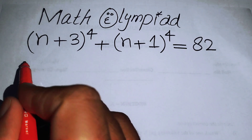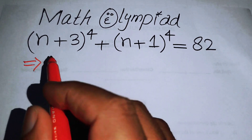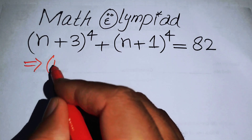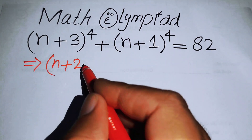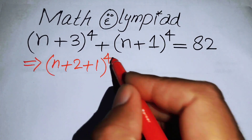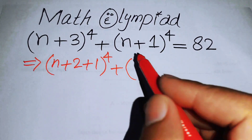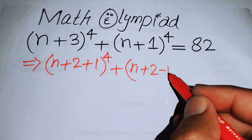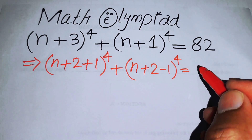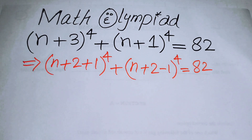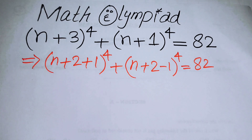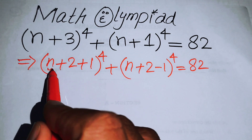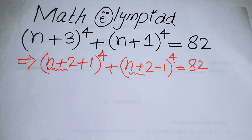The very first thing we are going to do is rewrite this equation. We write (n+3) as (n+2+1) to the power 4, and we write (n+1) as (n+2−1) to the power 4, so the whole equation equals 82.